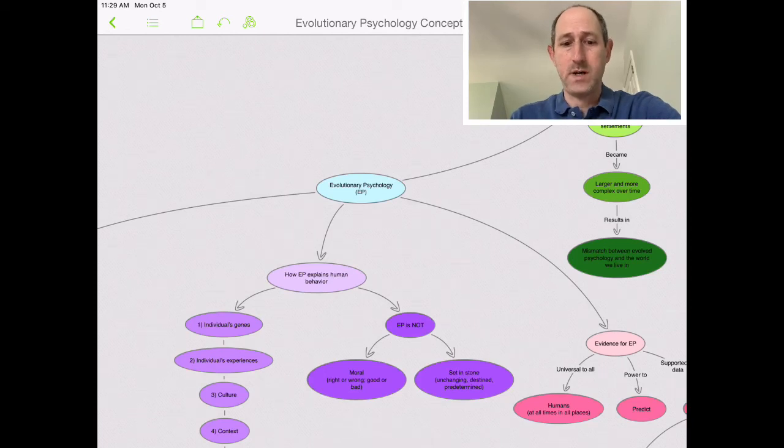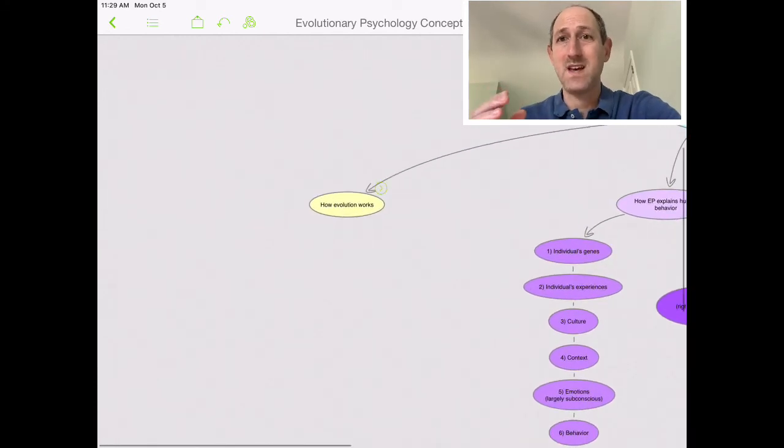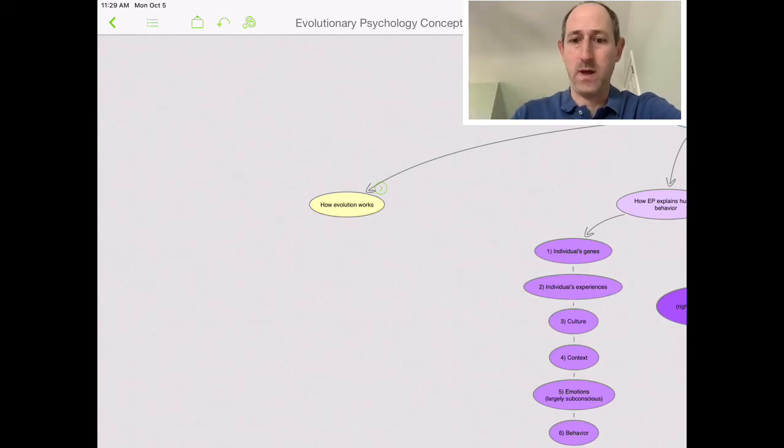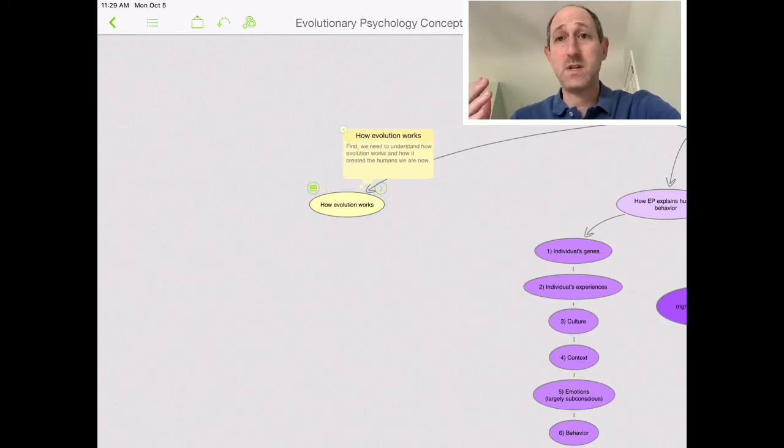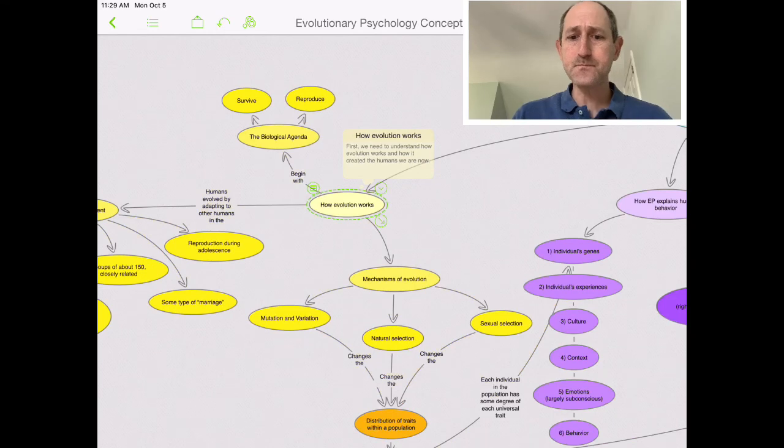This is about evolutionary psychology. In this video, we're going to talk about how evolution works and understand how that contributes to the evolved psychology that we have. So first thing we need to understand is how it works and it creates the brains that we have now. So let's talk about what we begin with.